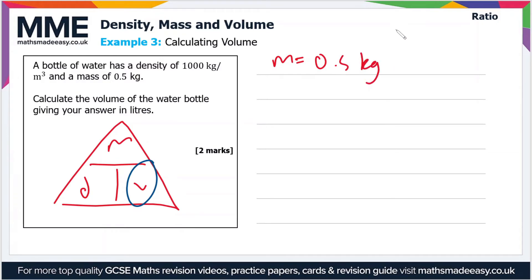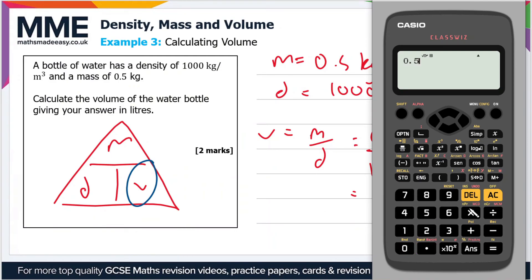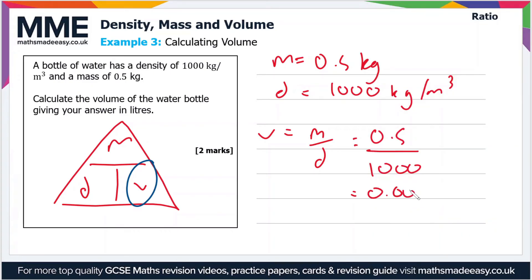Volume equals mass divided by density, which equals 0.5 divided by 1000. If we put that in the calculator—you can do it in your head if you want—we get a value of 0.0005. That volume is in meters cubed because we're dividing kilograms by kilograms per meters cubed, so the kilograms cancel and we end up with meters cubed.